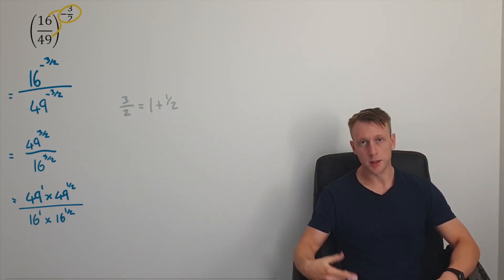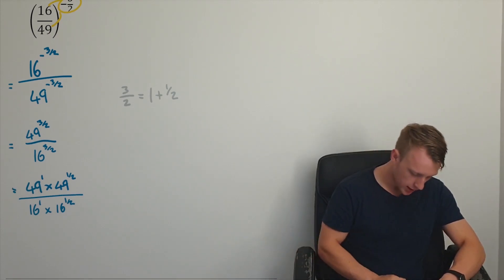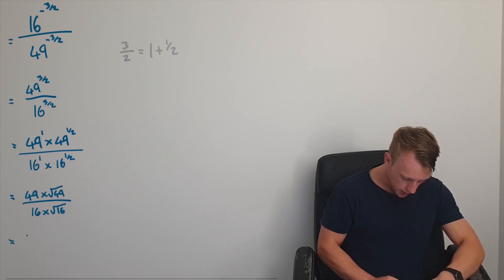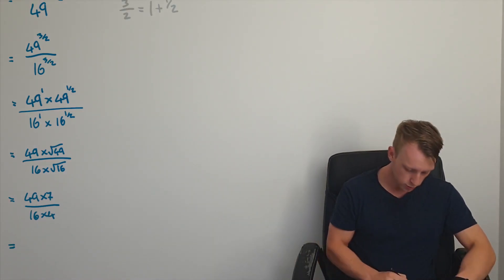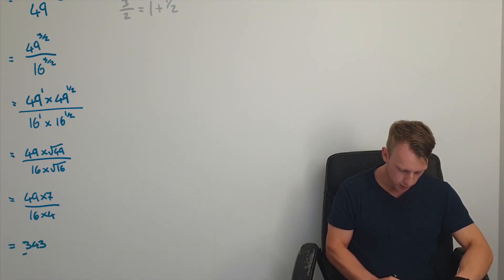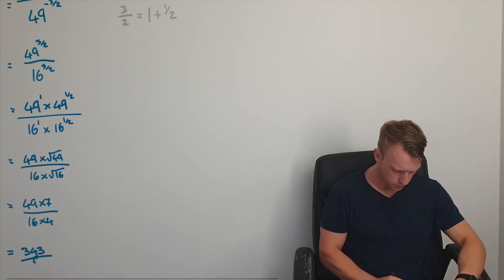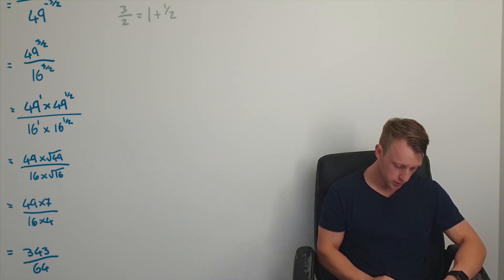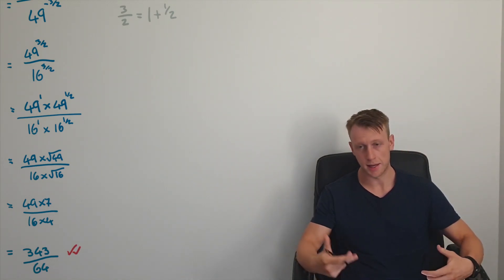All right, and we know the power of a half is just the square root. So this is 49 times by the square root of 49 over 16 times by the square root of 16, which is just 49 times 7 over 16 times by 4. And that's just going to give us 343 over 64. And this fraction is irreducible, so pretty much done.